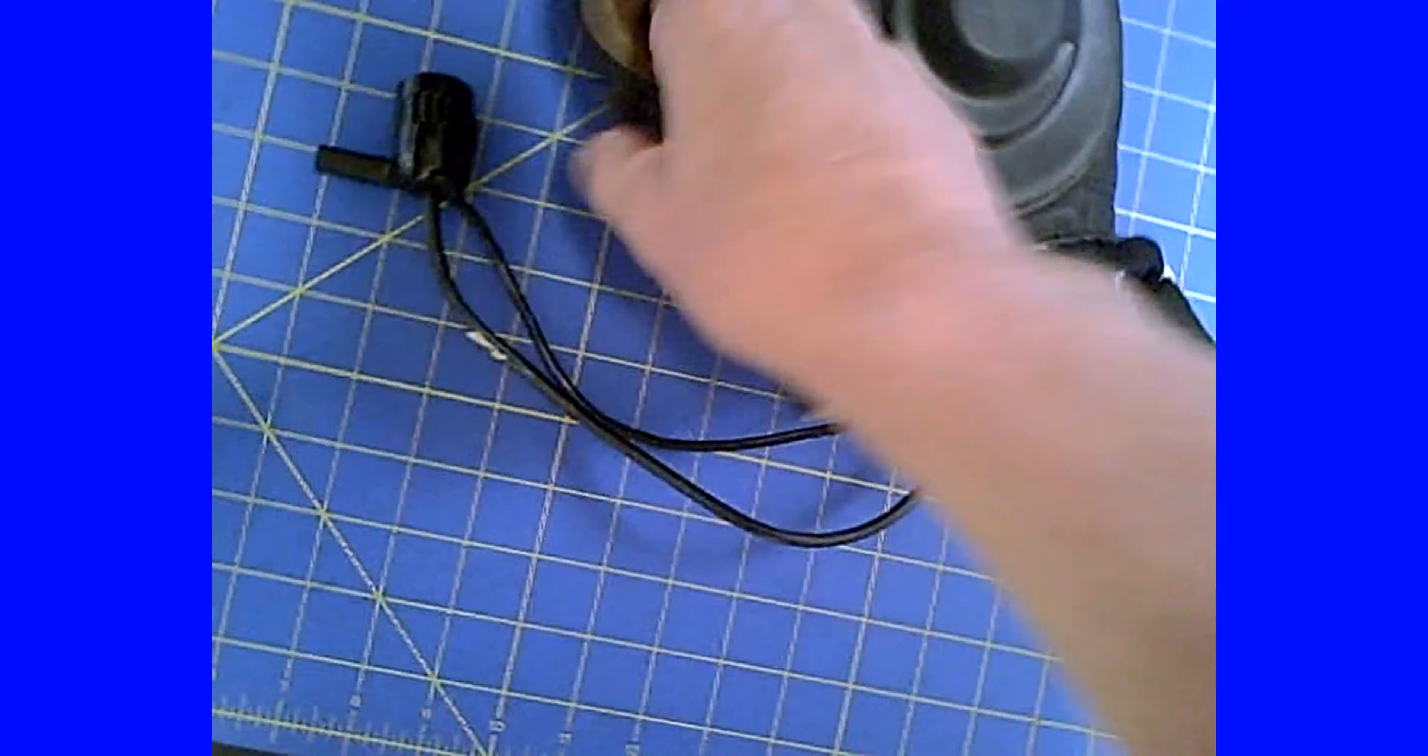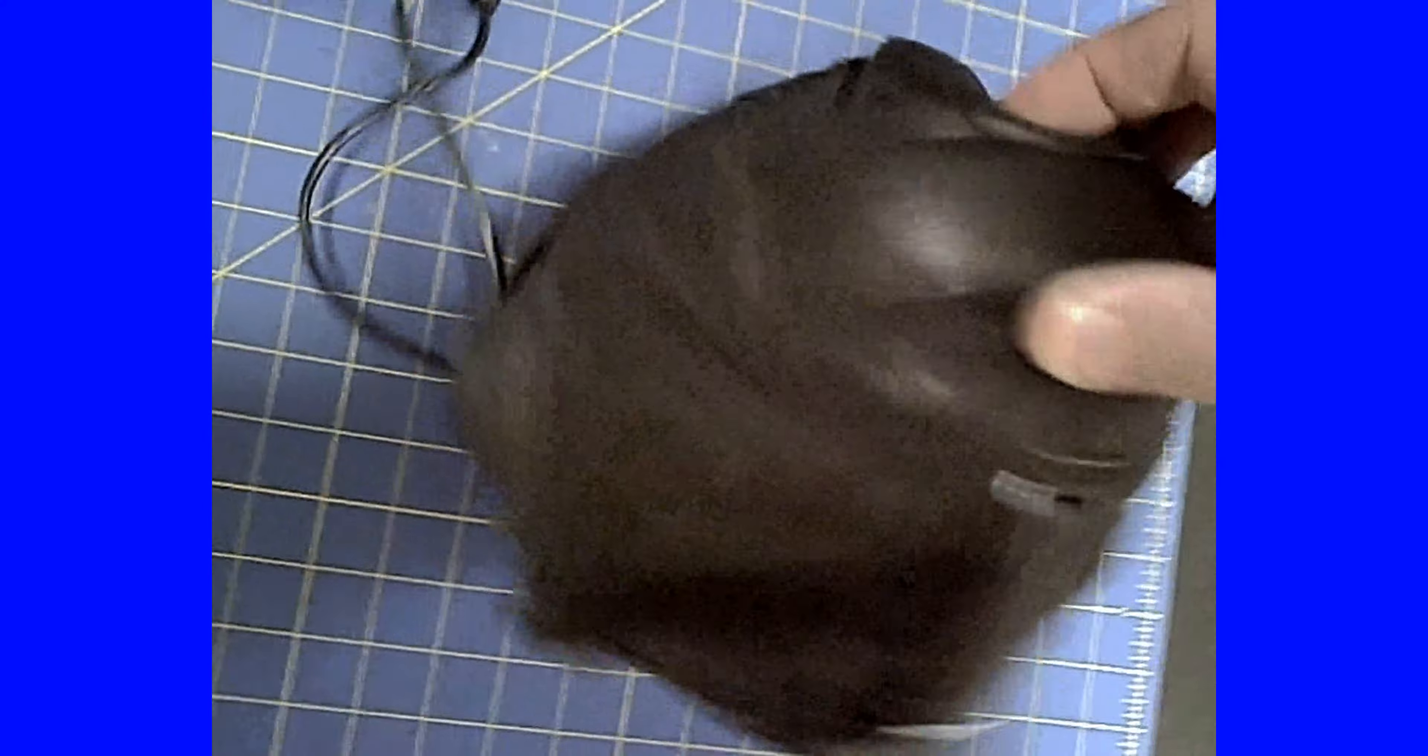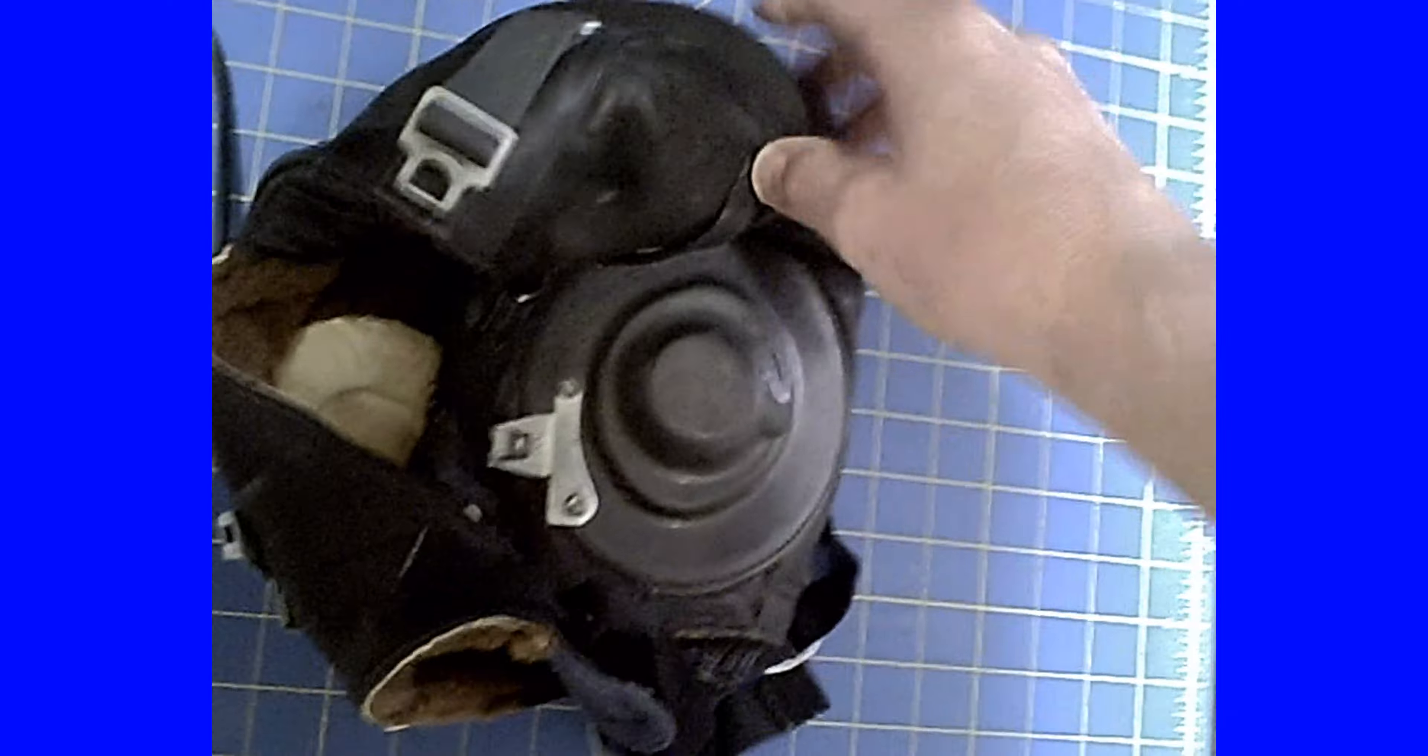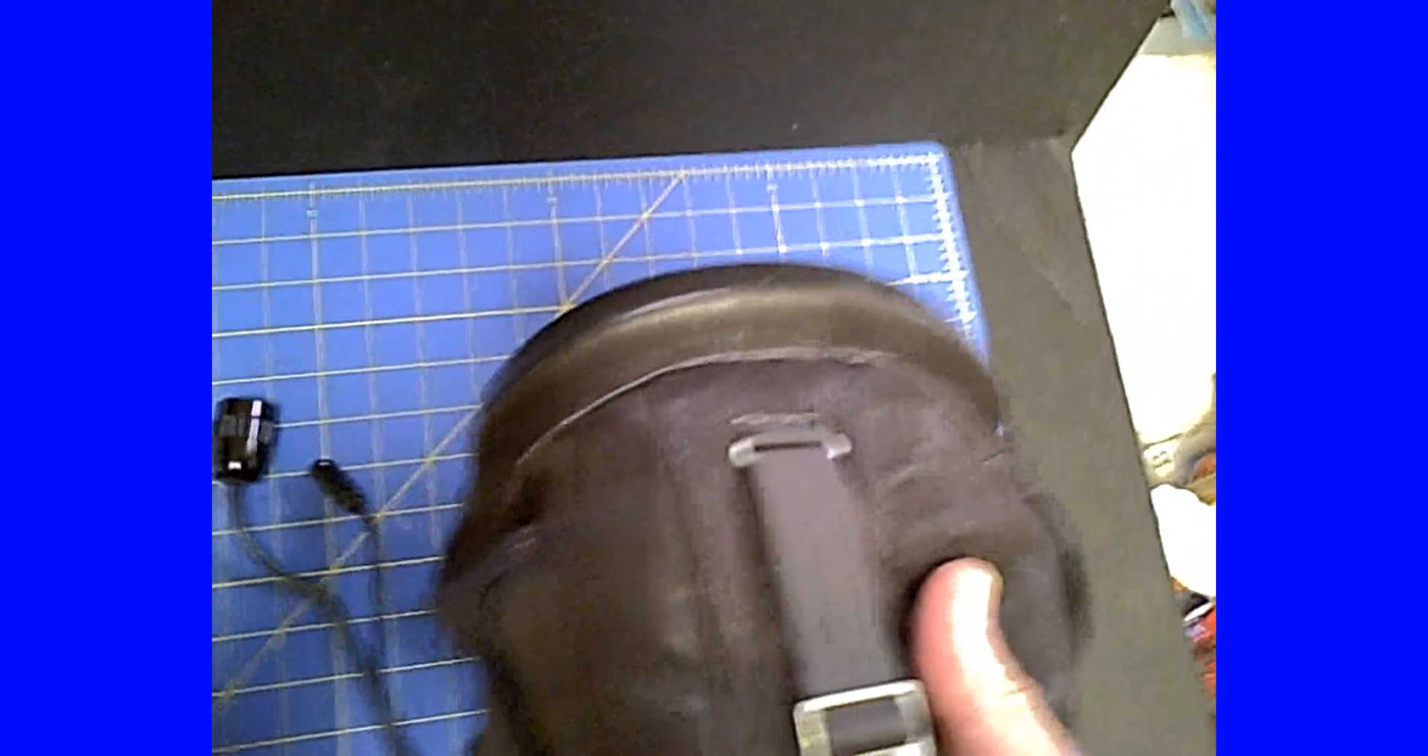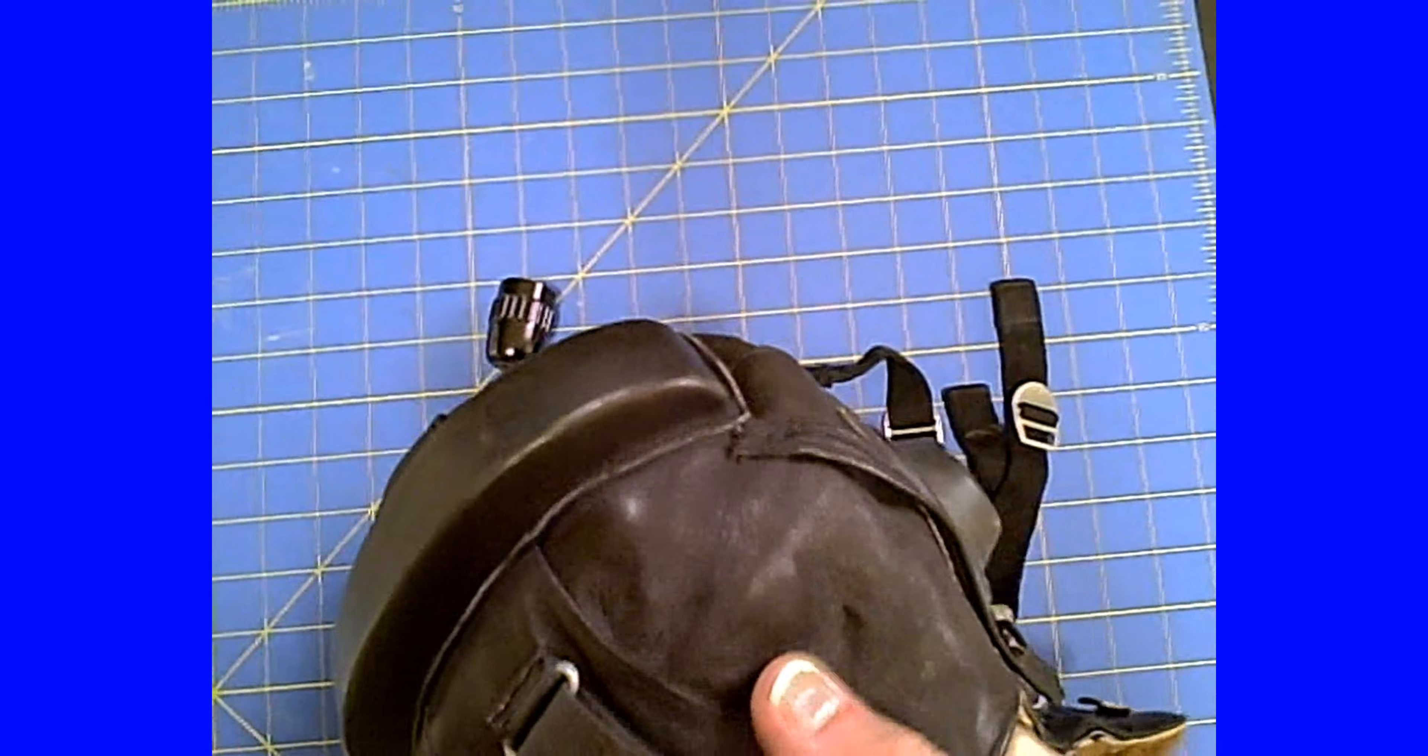There is a soft pad here on top because when you're jinking about the sky and your head's banging into the canopy, you don't want to get rendered unconscious. So a little bit of minimal padding up there.